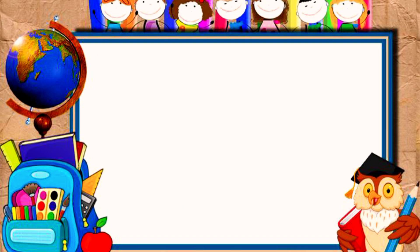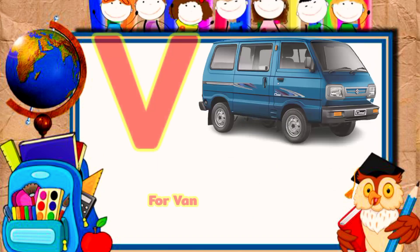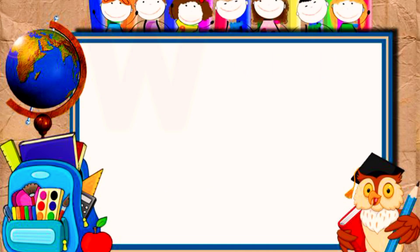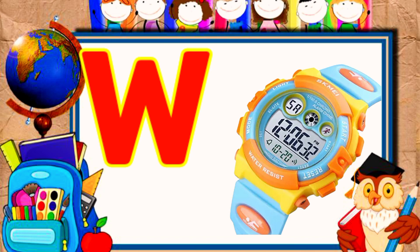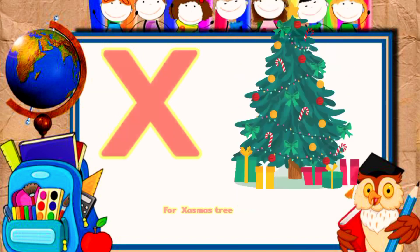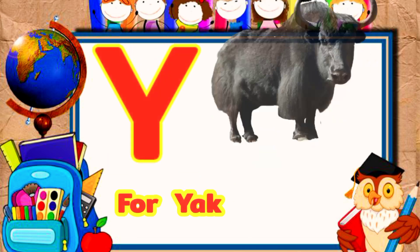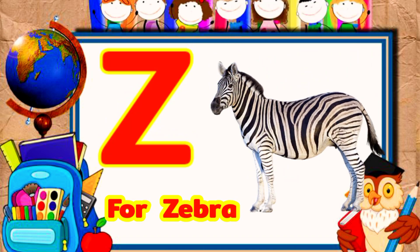U for umbrella, V for red, W for watch, X for accessory, Y for yard, Z for zebra.